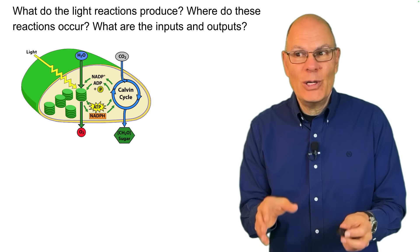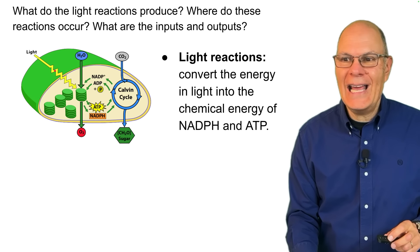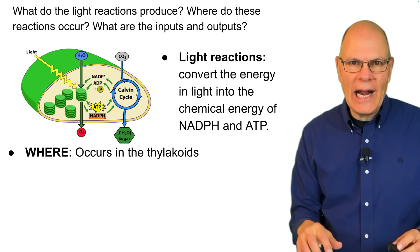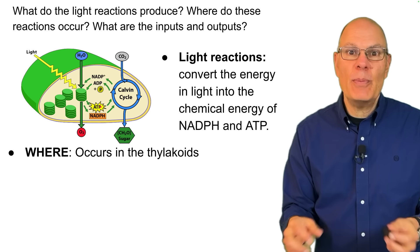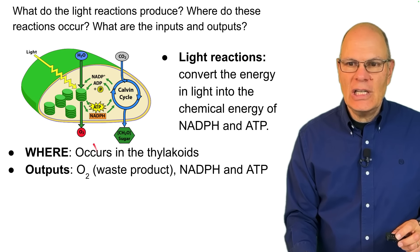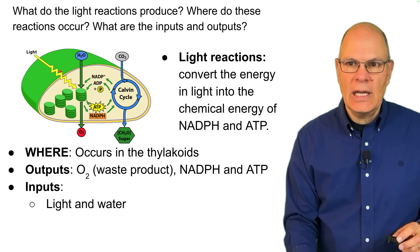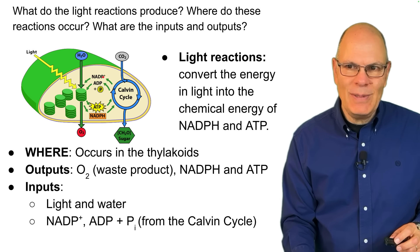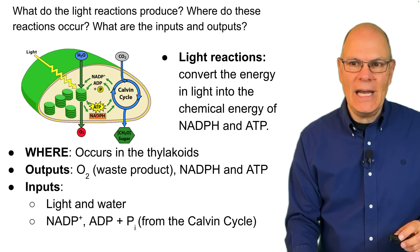What do the light reactions produce, where do they occur, and what are the inputs and outputs? The light reactions convert light energy into the chemical energy of NADPH and ATP. NADPH is an electron carrier like NADH in cellular respiration; ATP is the workhorse of the cell. The reactions occur in the thylakoids. Oxygen is a waste product, along with NADPH and ATP as outputs. The inputs are light and water. NADP⁺ and inorganic phosphate from the Calvin cycle feed back in as inputs.